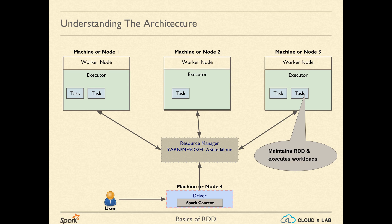Inside each task, the Spark application is executed. The Spark application, or task, does the actual work of executing various workloads and maintaining RDDs. If Spark is being run on YARN, the task runs inside YARN containers. The Spark application can also run on a local machine if we are running in standalone mode. We will learn about standalone mode soon.